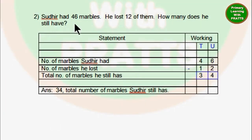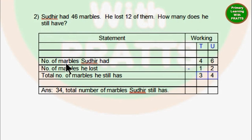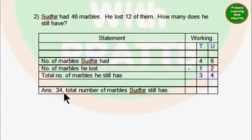Second question: Sugheed had 46 marbles. He lost 12 of them. How many does he still have? We will follow the same method of statement and working, then we will start with our statements. Always remember, statements are there in the word problem itself — you only have to pick from there and write here. We always start with 'number of'. Number of marbles Sugheed had: 46. Number of marbles he lost: 12. Minus sign in blue pencil. Total number of marbles he still has. 6 minus 2 is 4, 4 minus 1 is 3. So the answer is 34. Total number of marbles Sudhir still has.